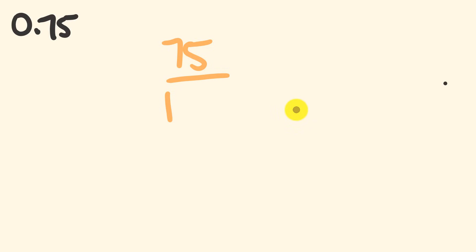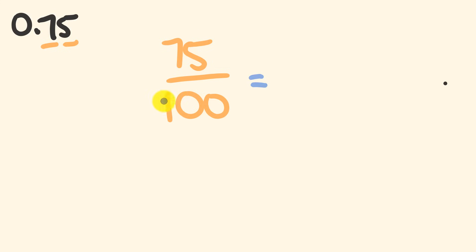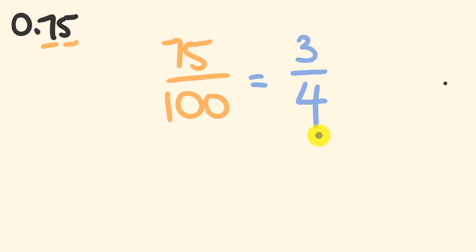What we do is we literally just write down 75 as the top part of our fraction, and we put this over a 1 with a number of zeros after it. How many zeros? Simple — just count how many digits are to the right of the decimal place. We have 1, 2 — we have two zeros. So 0.75 is equal to 75 over 100. Now we can simplify this: 25 goes into both the numerator and the denominator. So 75 divided by 25 is 3, and 100 divided by 25 is 4. That's how you change 0.75 into its equivalent fraction.